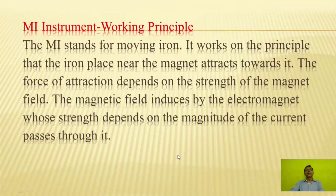We will now see the working principle of MI type instruments. MI stands for Moving Iron. It works on the principle that iron placed near a magnet is attracted towards it. The force of attraction depends on the strength of the magnetic field, which is induced by the electromagnet whose strength depends on the magnitude of the current passing through it.